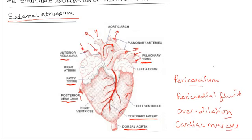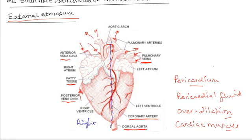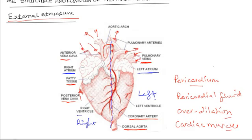On the surface, the heart has two sides — the right side and the left side. Because the heart is facing us, what is to your left is actually the right side of the heart. There are four chambers, two on each side: the upper chambers are the right atrium and left atrium, and the lower chambers are the right ventricle and left ventricle. To understand how these chambers function, we need to look at the internal structure of the heart.